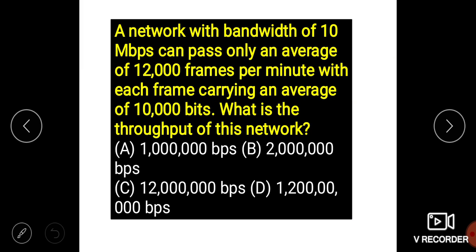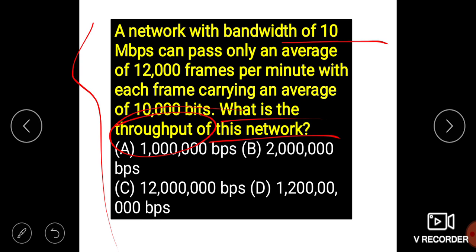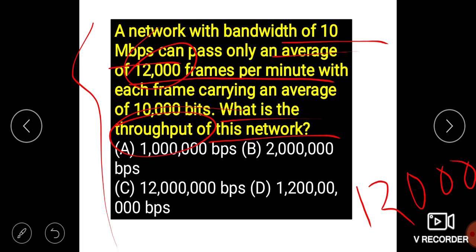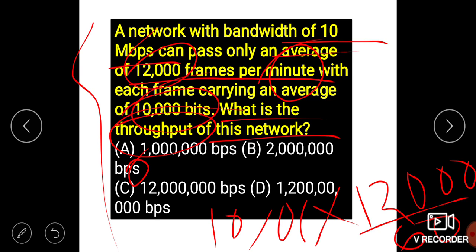For the throughput question, the bandwidth is 10 Mbps and the average frames per minute is 1200. Since the answer is required per second, divide 1200 by 60, then multiply by 100 bits. The result is 2, so option B is correct. Note that the bandwidth value is redundant and not needed for this calculation.